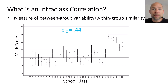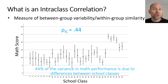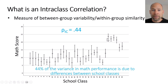In this example the intra-class correlation coefficient is 0.44. This means that 44% of the variance in math performance is due to differences between school classes — and that's a huge amount. This is reflected in the large scatter of the school-class-specific means across the plot, showing a lot of between-group variability.